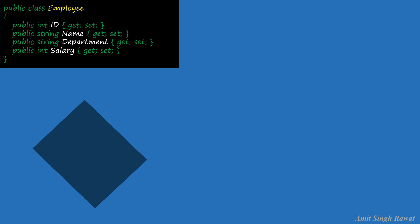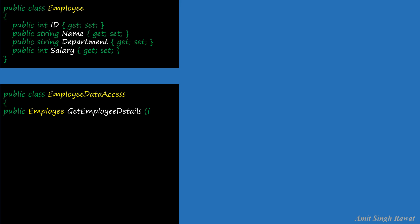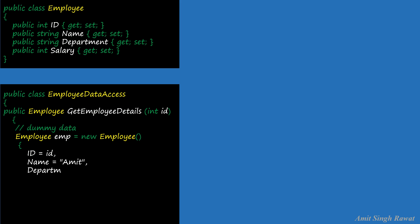Next class will be EmployeeDataAccess, which will fetch actual employee details from the target repository. So: public class EmployeeDataAccess. This class will have one public method, getEmployeeDetails, with id as an input parameter. For simplicity, we return a dummy object: Employee emp = new Employee, with id set to id, name set to Amit, department set to Engineering, and salary set to 10,000. Let's return that object. We are done with our second class.